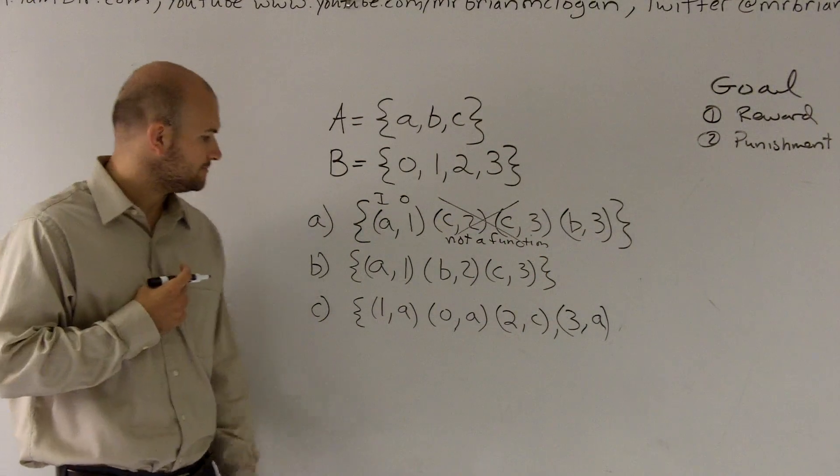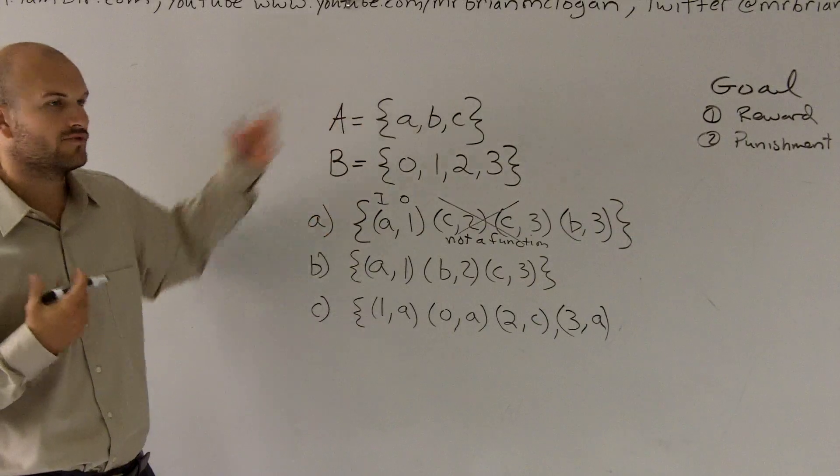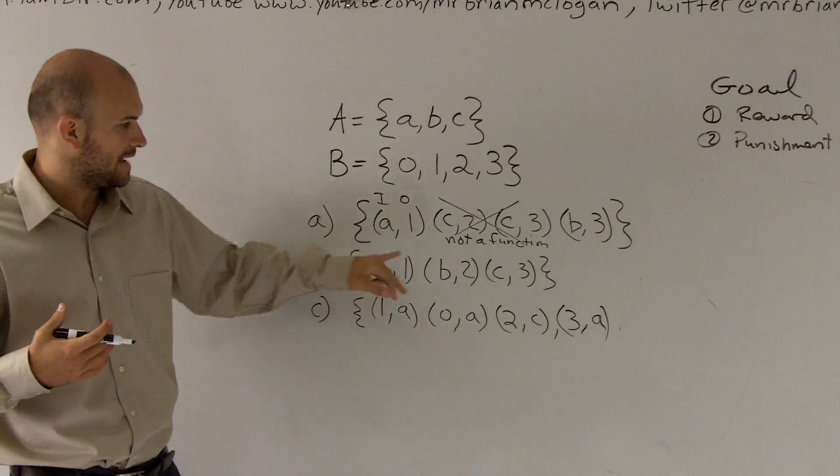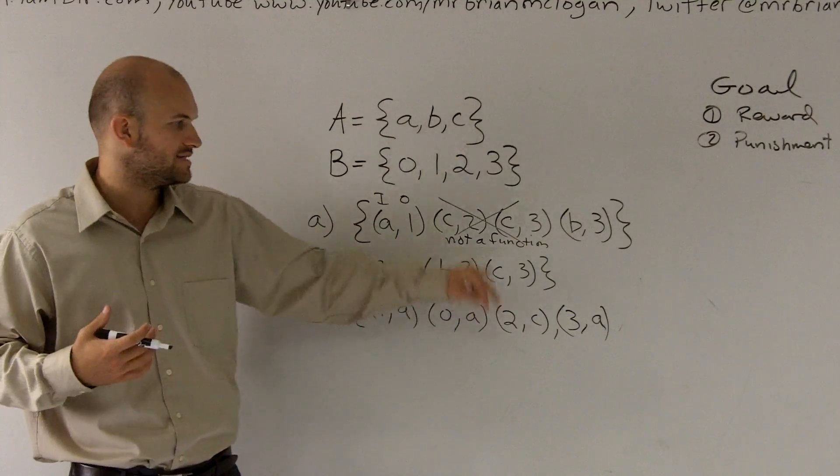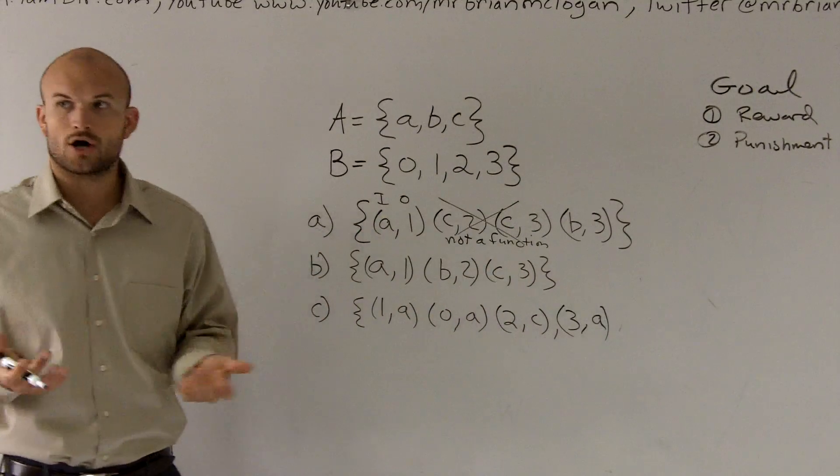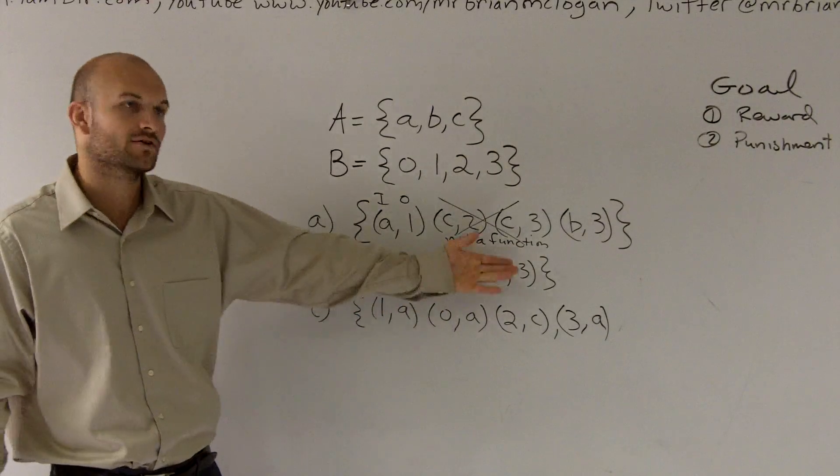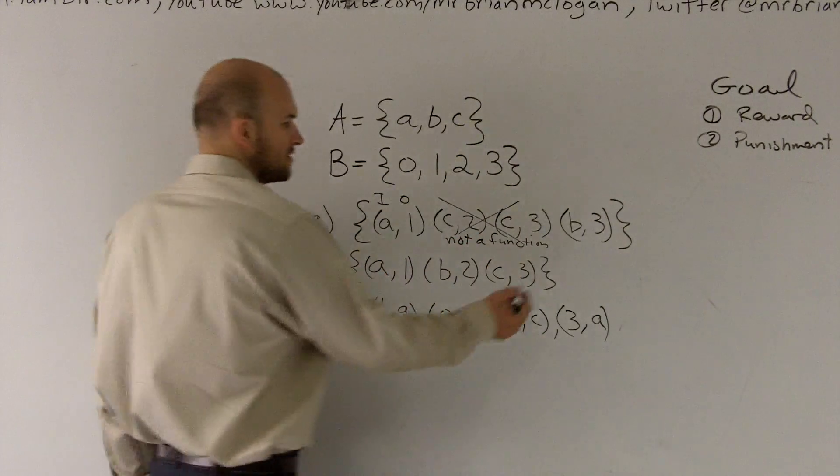Overall, for letter B, again, we just go ahead and check. Make sure everything in set A maps to everything in set B. So you see A maps to one, B maps to two, and C maps to three. Then, are those all unique relationships? And you can obviously see that, yes, every single one of those is unique. So therefore, this is a function.